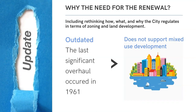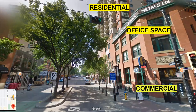The first reason for an update is that the current Bylaw does not support compact mixed-use and sustainable development. Mixed-use development generally means a combination of different land uses, either within the same building or within the same development. Looking at the street in downtown Edmonton on 104th, we see an example of a mixed-use development in action. This is just one such development on the street that would qualify as mixed-use.